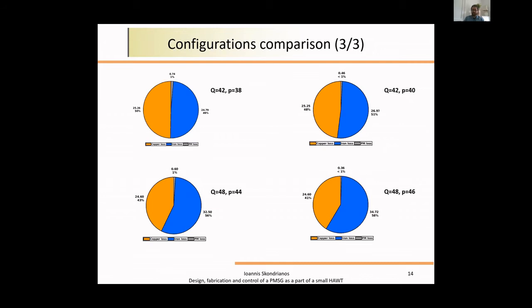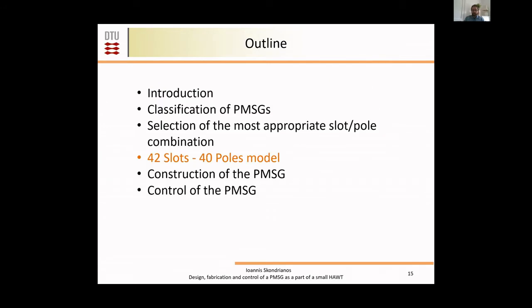This can be depicted in this slide too. The blue part of the pie is the iron losses. We can see again as the number of poles increases, the losses do so. Also, permanent magnet losses, the eddy currents on the magnets, are 1% or less of the total losses. Taking all this into consideration, we decided to go with a 42 slot and 40 pole model.